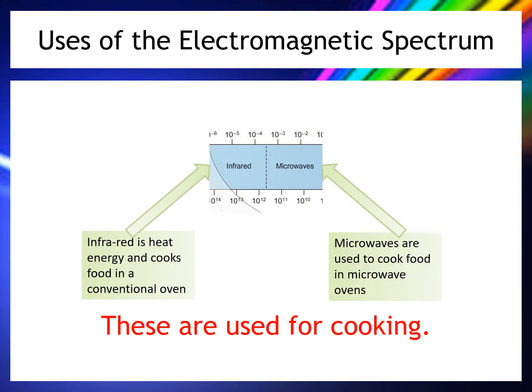Also in this section of the spectrum, where frequency is a little higher, we find cooking applications. Microwaves are used in microwave ovens — they cause water molecules to heat, cooking food from the inside out, which is why they're much quicker than conventional ovens. Conventional ovens use infrared because infrared is heat energy, which is transferred by radiation — infrared waves.